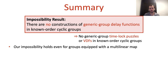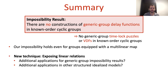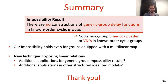Okay, so this concludes the talk. What we saw was that there are no generic group delay functions in cyclic groups of known order, which in particular means that there are no generic group timelock puzzles or VDFs in these groups either. We also mentioned that this result extends to multilinear groups, and you can find the proof in the paper. Our attack relied on a new technique in the generic group model of exposing linear relations, and it is an interesting open question whether this technique might have additional applications for proving additional lower bounds in the generic group model or in other related well-structured idealized models. Thank you for listening.